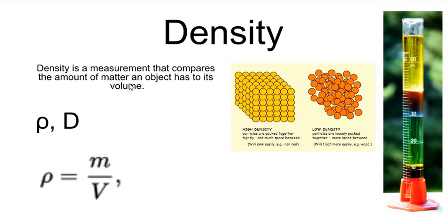So like before, mass is how much matter there is, or how much it weighs, and volume is how much space it takes up.